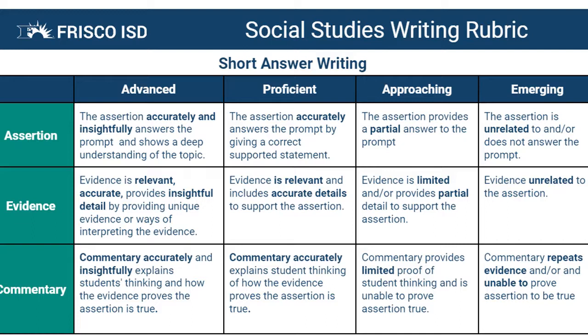Now that you have the rubric, you can see assertion, evidence, and commentary for short answer writing is broken down into four scales from advanced all the way to emerging.